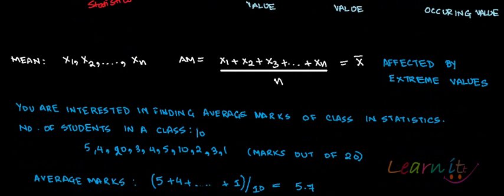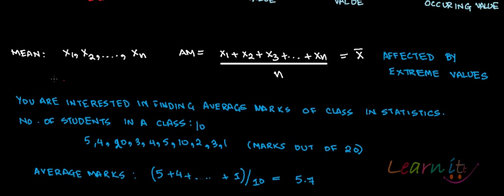So let's talk about mean. Mean — say for example x1 through xn, these are the different points in the data set. Then arithmetic mean would be the sum of these divided by the total number, so x1 plus x2 plus x3 and so on to xn divided by n, and this is x-bar, the mean value. But the point is that this is affected by extreme values.